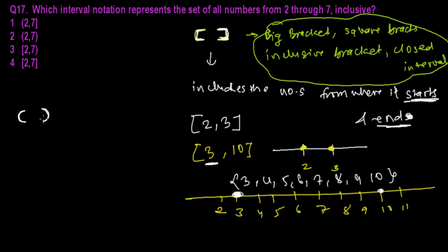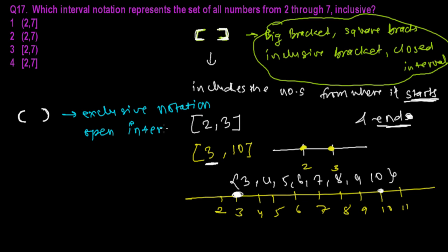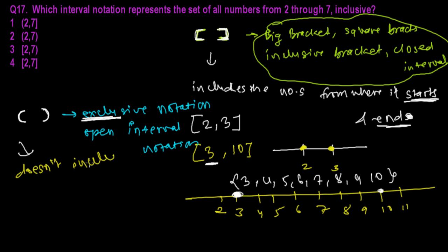The next type is the open bracket, also called an exclusive bracket or exclusive notation, or open interval notation. From the name itself it's very clear — exclusive means exclude them, don't take them. It does not include the numbers from where it starts and ends.